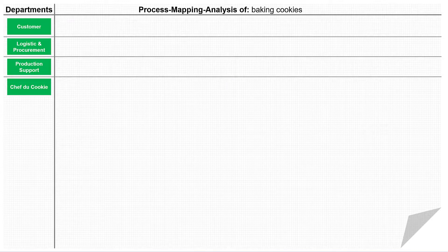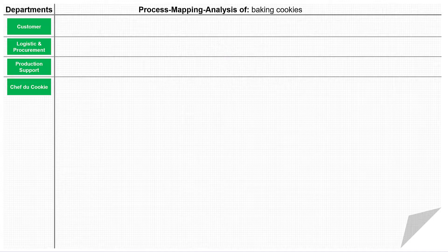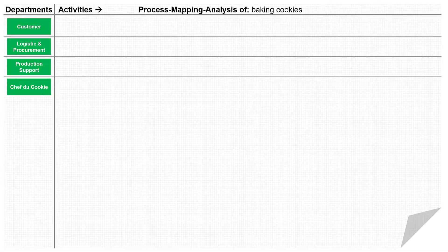But we don't want to document the process — we won't even consider decisions, which are usually marked as diamonds in a flowchart. In our bakery, the customer is on top of the department list, and I ask what the customer is typically doing first. We already know the answer from the SIPOC: transmit request for cookies. I note this activity on a sticker and post it to the right of the first department. Make sure you always describe activities with at least a verb and a noun, because only verbs can express activities and the noun represents the object of the activity.